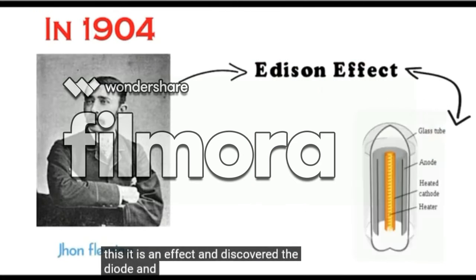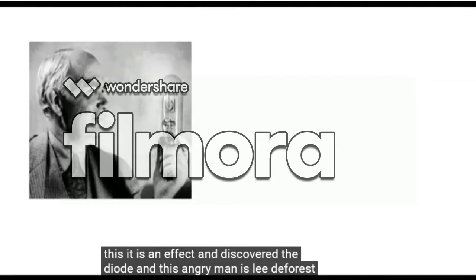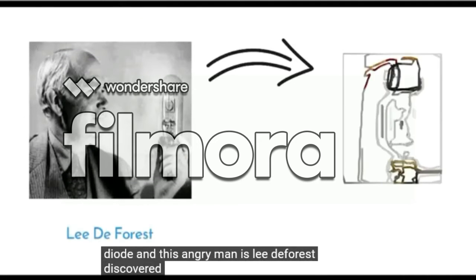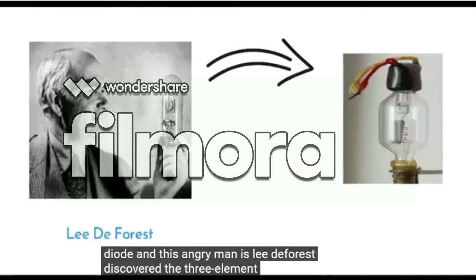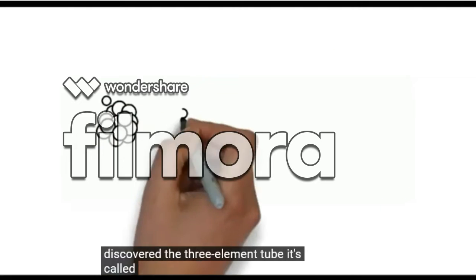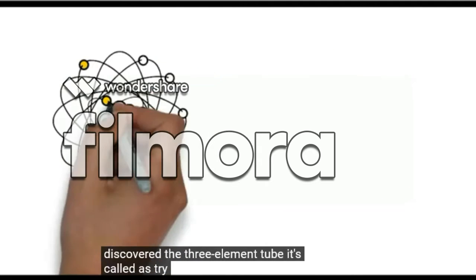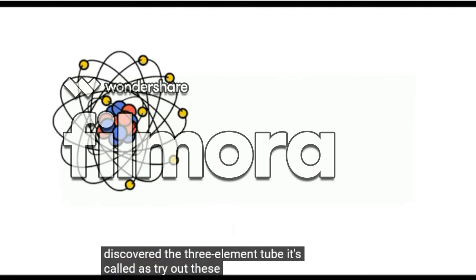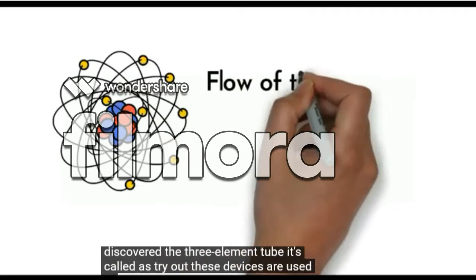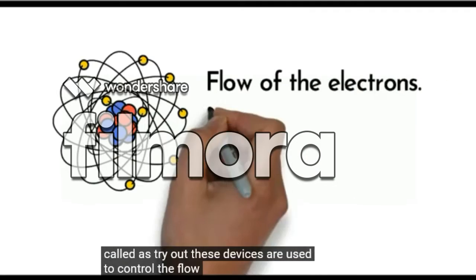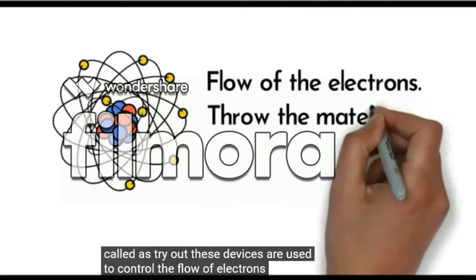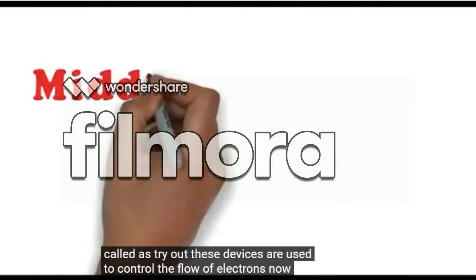Lee de Forest discovered the three-element tube, called the triode. These devices are used to control the flow of electrons.